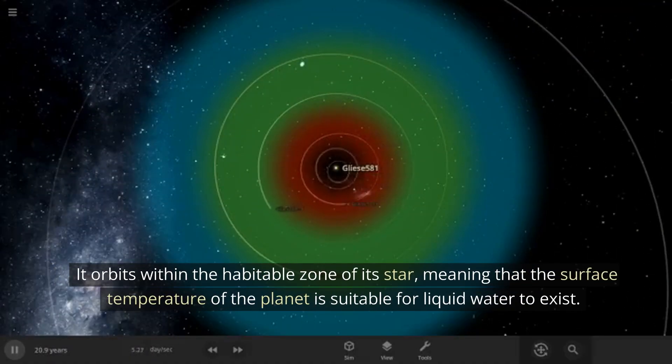It orbits within the habitable zone of its star, meaning that the surface temperature of the planet is suitable for liquid water to exist.